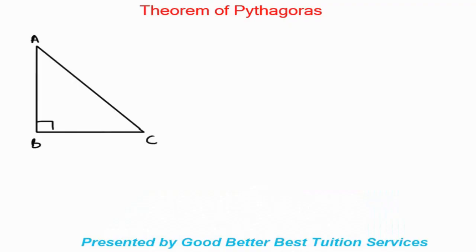Good day and thank you for joining us. In today's lesson we'll be looking at the theorem of Pythagoras. If you can remember from last year, the theorem of Pythagoras in words is: the square on the hypotenuse — the hypotenuse being the longest side of our triangle and opposite the right angle. The theorem says: the square on the hypotenuse...